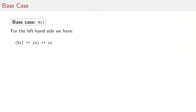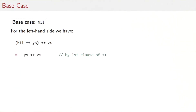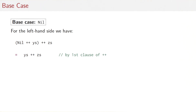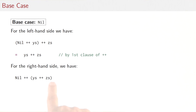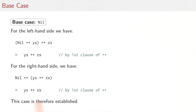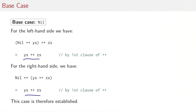Let's look at the structural induction. The base case is Xs = nil. On the left-hand side we have (nil ++ Ys) ++ Zs, which simplifies to Ys ++ Zs by the first clause of ++, which says nil ++ Ys = Ys. On the right-hand side we have nil ++ (Ys ++ Zs), which again simplifies to Ys ++ Zs by the first clause of ++. We have equality on both sides, so the case is established.